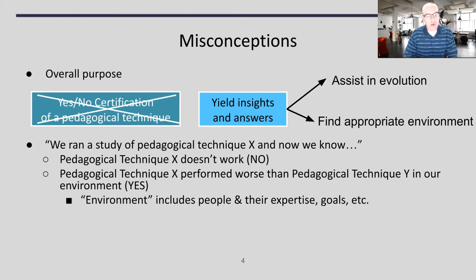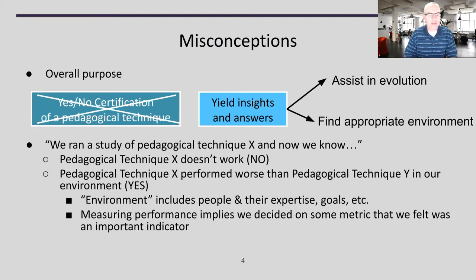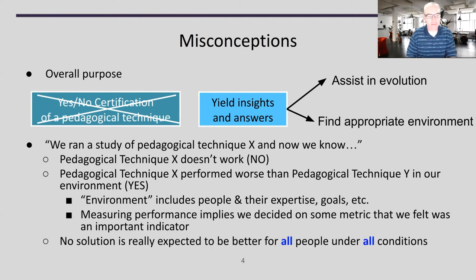That presupposes we've defined the environment — including the people in the study and their expertise, goals, and knowledge. It also implies that if we're going to say better or worse, we need a metric that is an indicator of performance, so we have to define those things early on. We should not assume there's a solution that's going to work best in every case — no solution is really expected to be better for all people, all students, under all conditions.